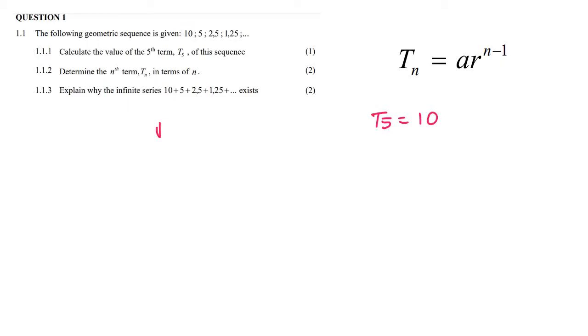To work out the ratio, take term 2 divided by term 1, which is 5 over 10, which equals one half.